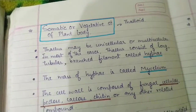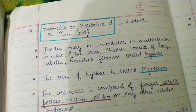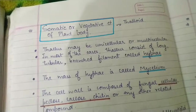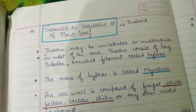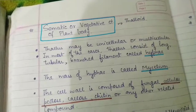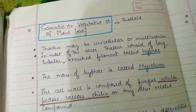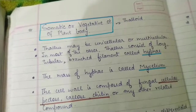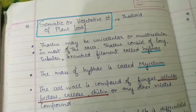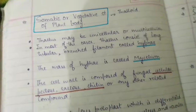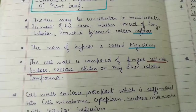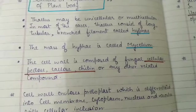Hyphae are long tube-like branched filament structures. A bunch of hyphae together is known as mycelium.